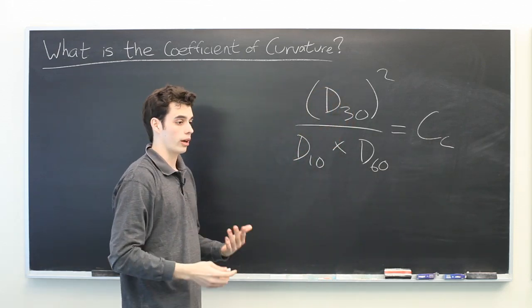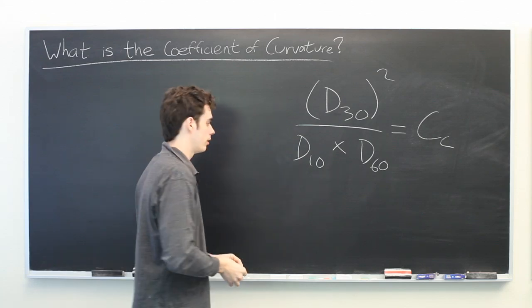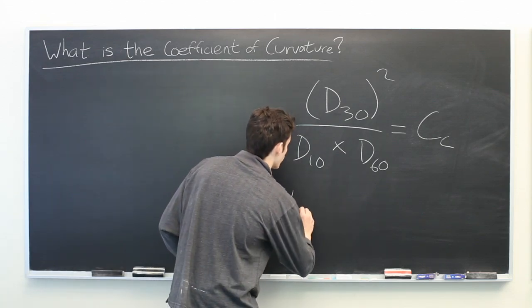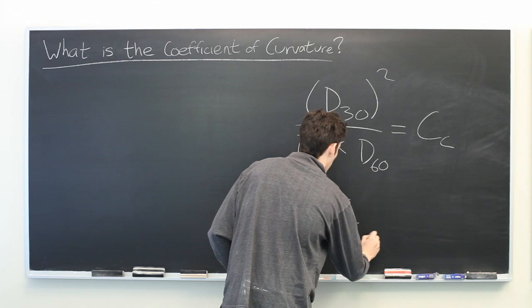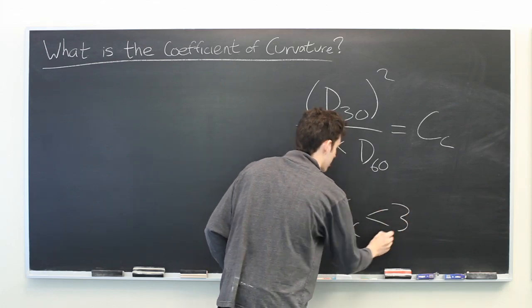In order for a soil to be well graded, the coefficient of curvature must lie between 1 and 3.